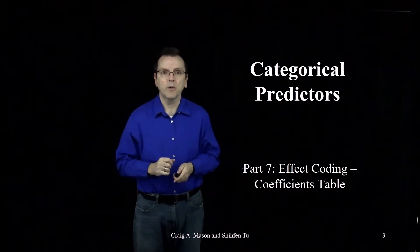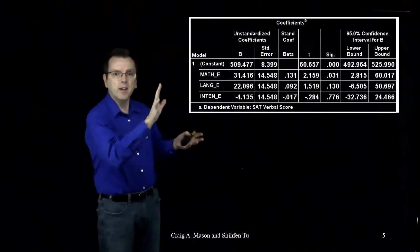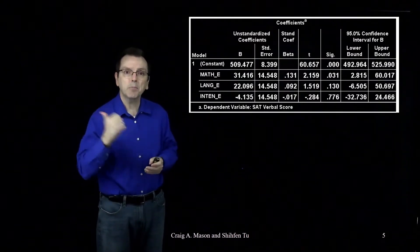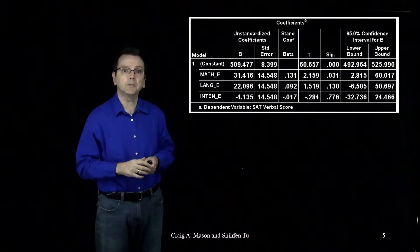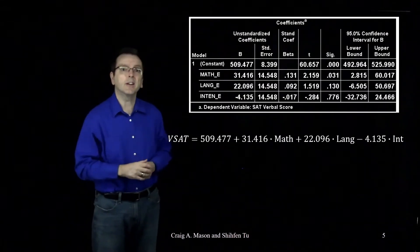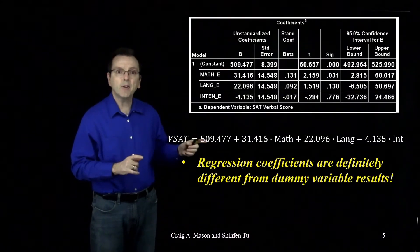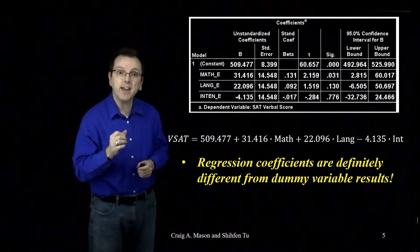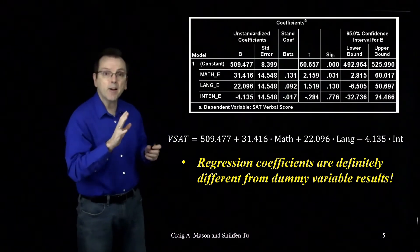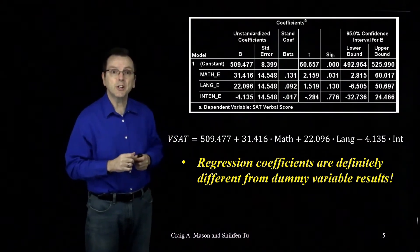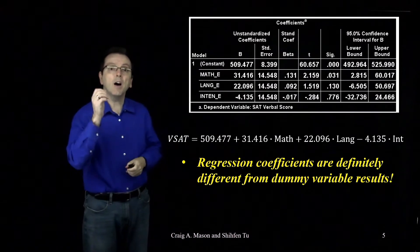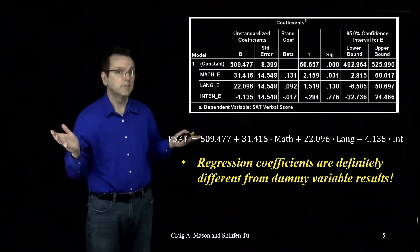Now let's look at the regression coefficients. Here are the regression coefficients using effect codes for the exact same data that we previously analyzed using dummy codes. We can write them out as the regression equation. Notice that the values for the coefficients have definitely changed from what they were as dummy variables, and with the values of the coefficients changing, the t-tests, the p-values, and the confidence intervals have also changed.